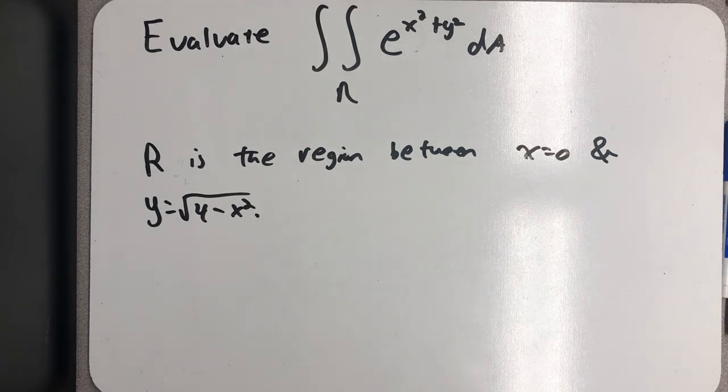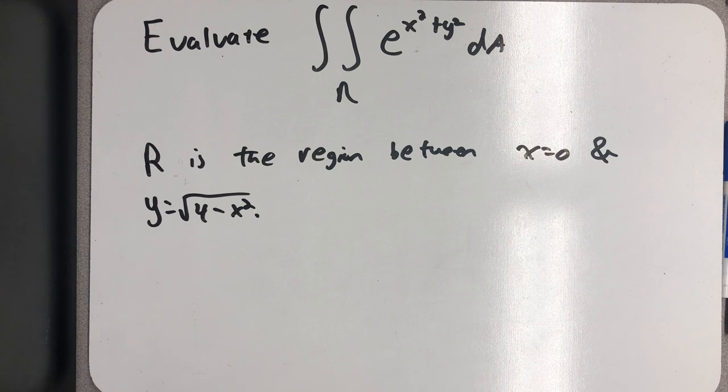Evaluate the double integral over the region R of e raised to the x squared plus y squared, dA, where R is the region between x equals 0 and y equals the square root of 4 minus x squared.